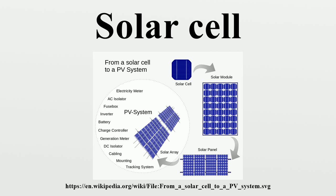In contrast, a solar thermal collector supplies heat by absorbing sunlight, for the purpose of either direct heating or indirect electrical power generation from heat. A photoelectrolytic cell, on the other hand, refers either to a type of photovoltaic cell, or to a device that splits water directly into hydrogen and oxygen using only solar illumination.